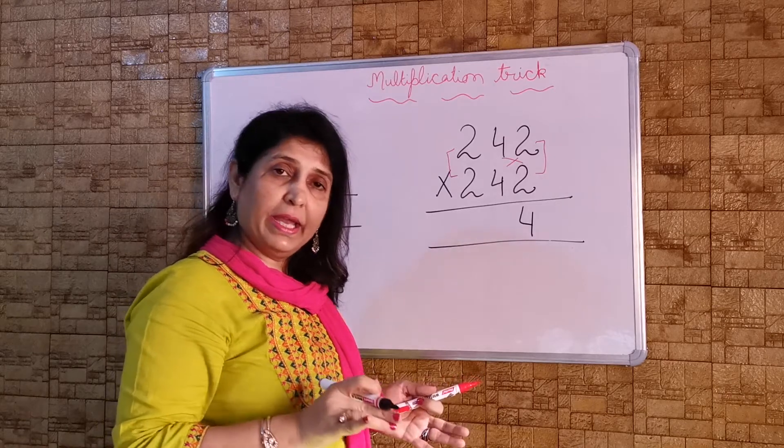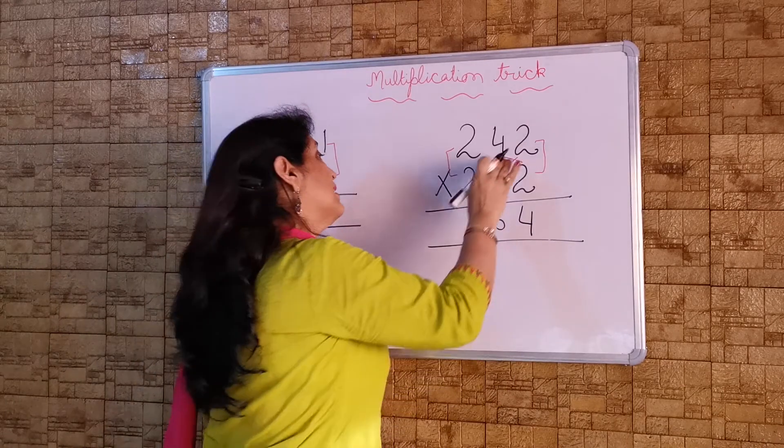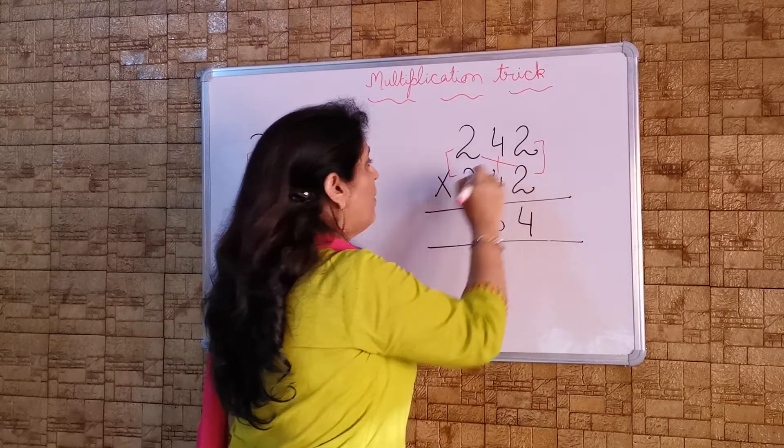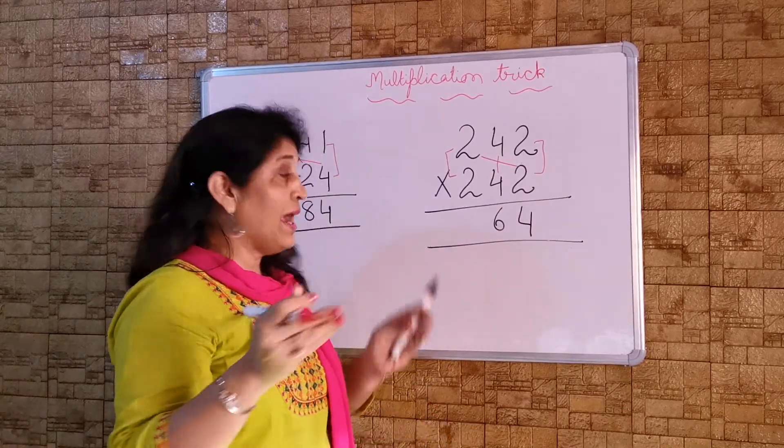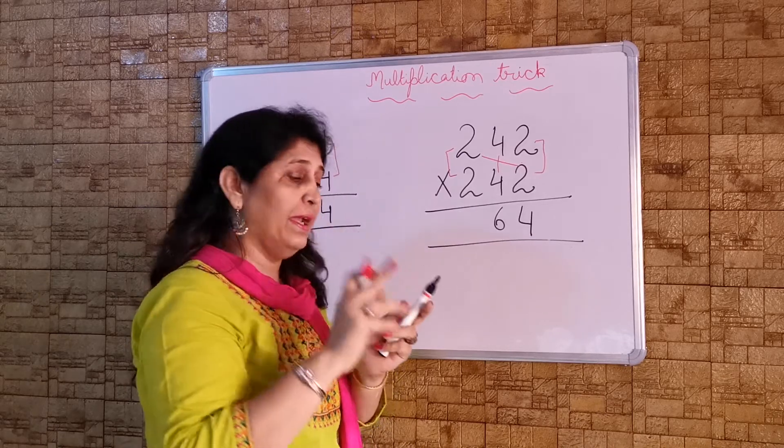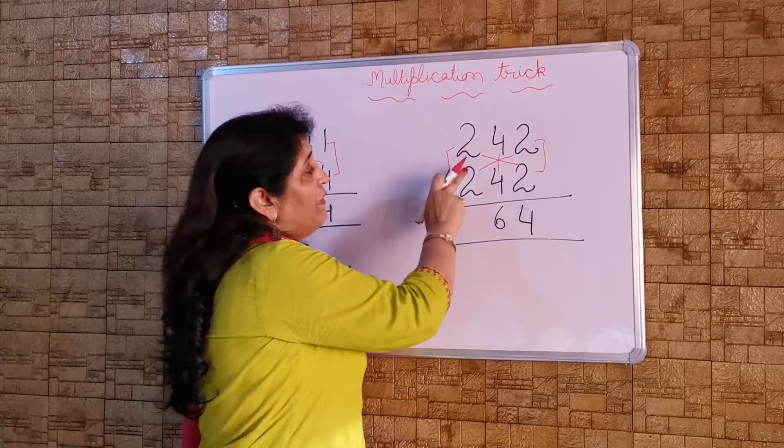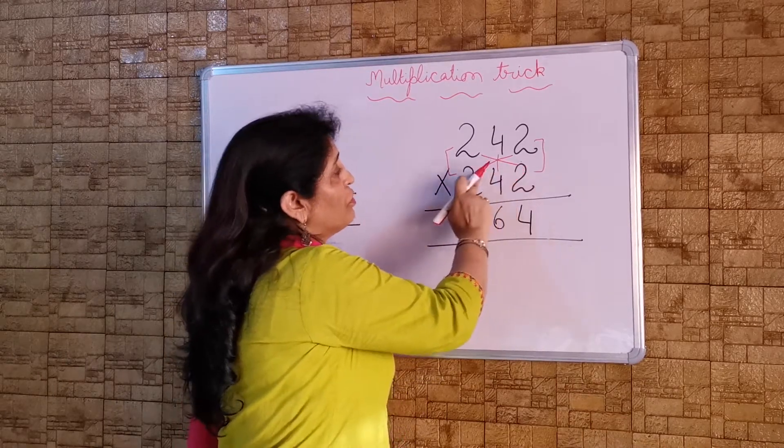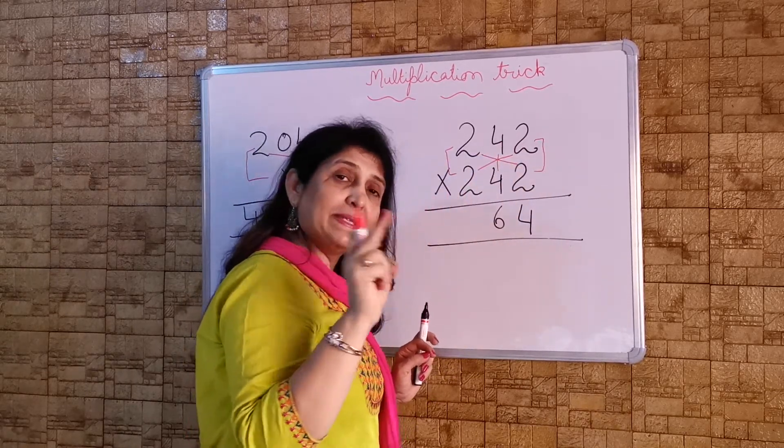2 times 4 is 8 and 2 times 4 is 8. 8 plus 8 is 16. 1 in the mind. Now take this multiplication sign towards this side and this will come. What are we going to do with these 2? When the multiplier is of 3 digit, we have to make, after the cross multiplication sign, we have to make another cross multiplication sign of 3 lines. Now I am going to put a line here. Now we will multiply these numbers and then add them up. 2 times 2 is 4. 2 times 2 is 4. 4 plus 4 is 8. And 4 times 4 is 16. 8 plus 16 is 24.